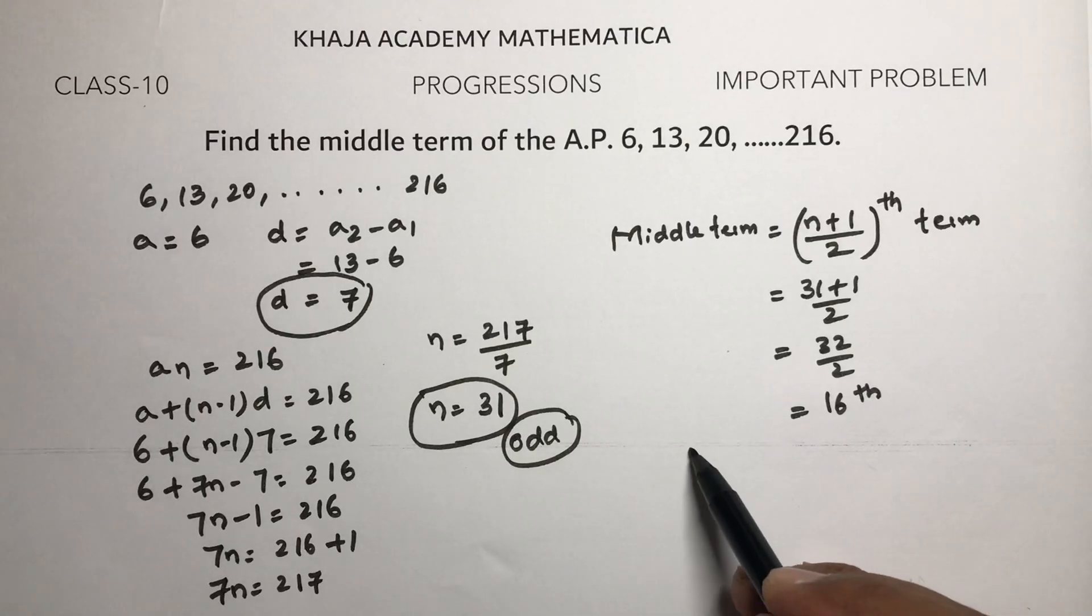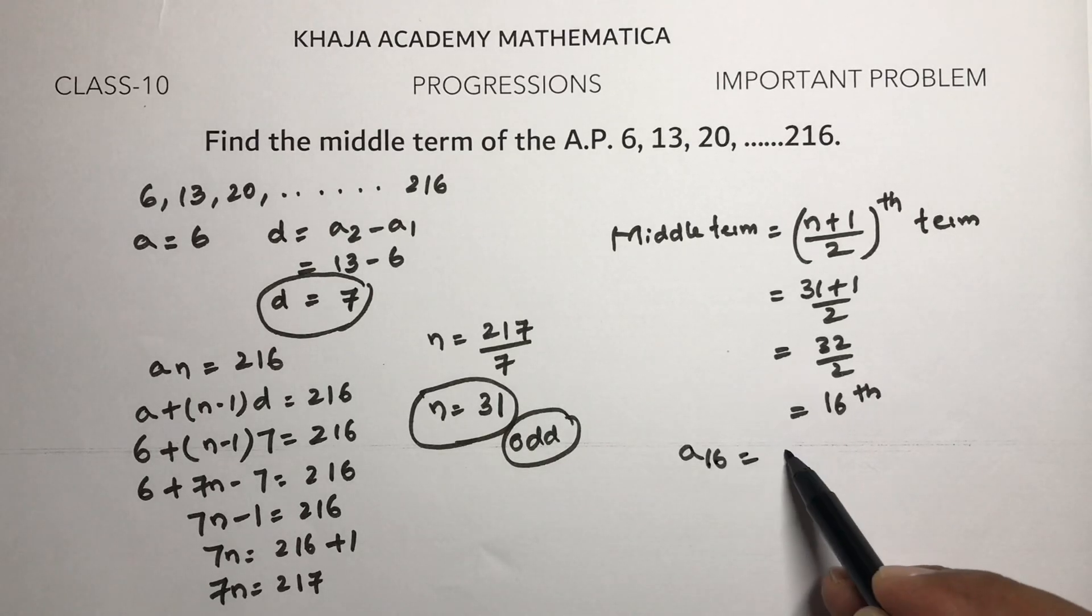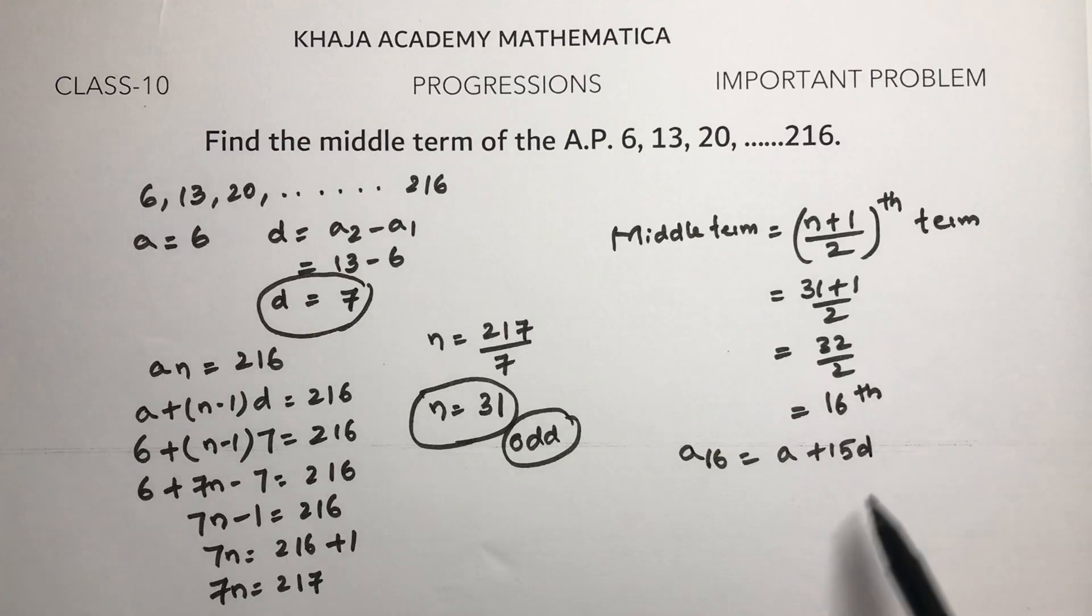So a₁₆ = a + 15d. Substituting the values, a₁₆ = 6 + 15×7.